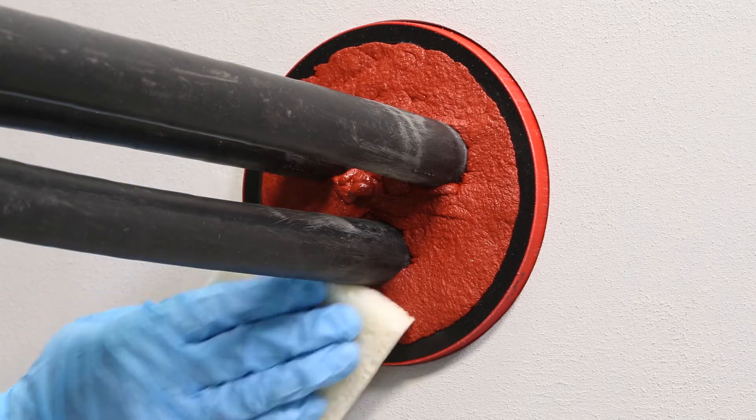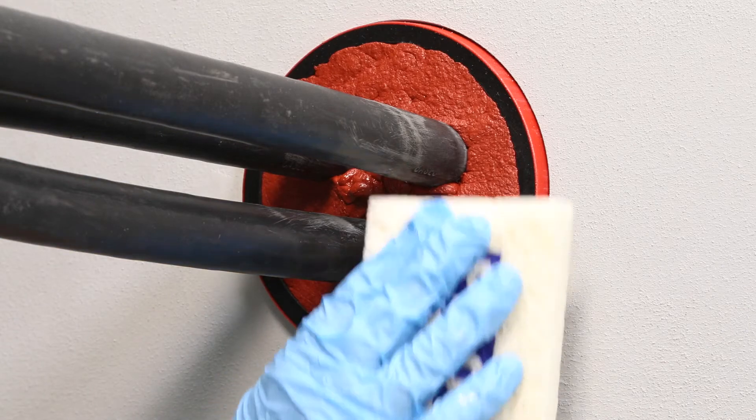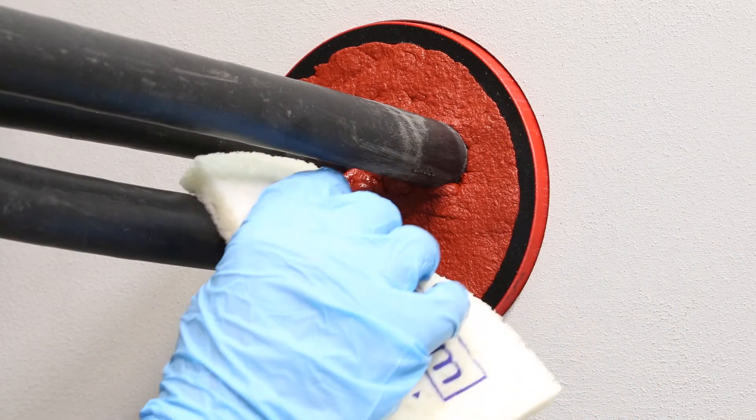Pat the MD Plus sealant into the duct, ensuring you cover every part of the seal. This padding of the sealant encourages it to adhere to the hexagonal tubes.